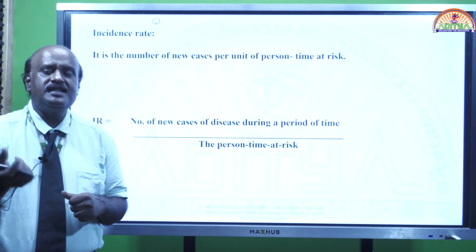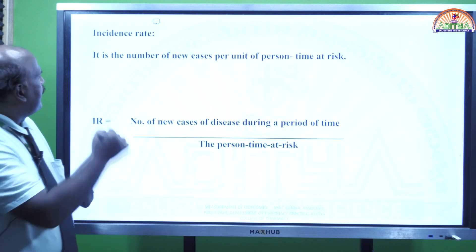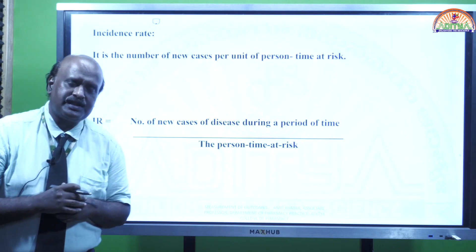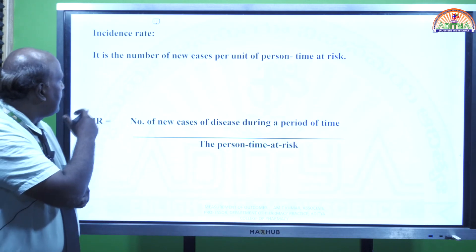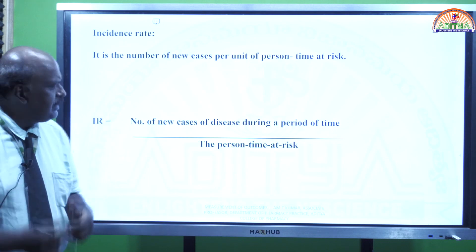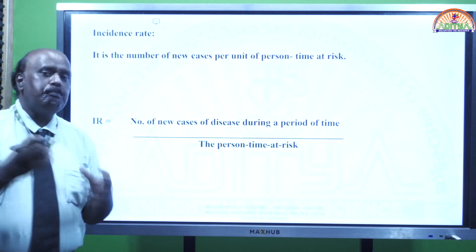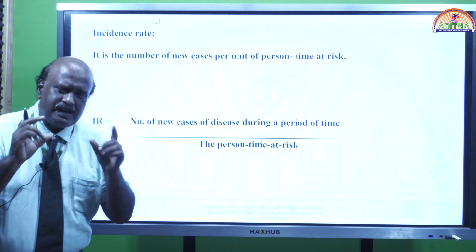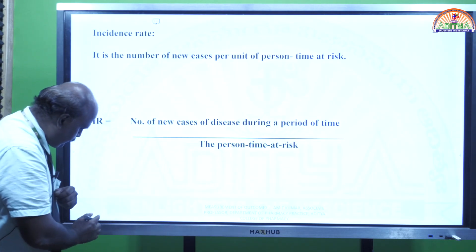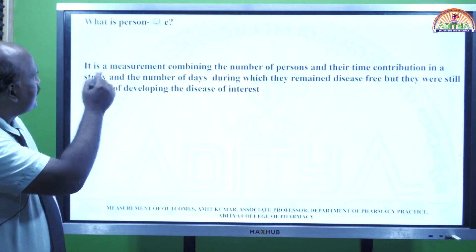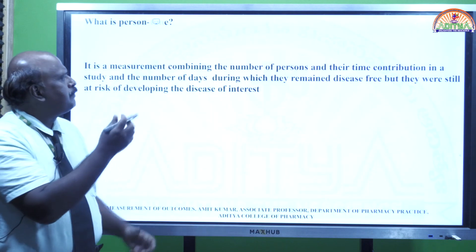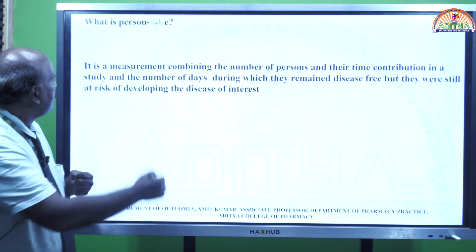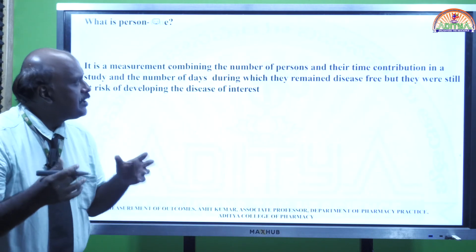The next method to measure incidence is called the incidence rate. It is the number of new cases per unit of person-time at risk. Incidence rate (IR) equals the number of new cases of disease during a period of time divided by the person-time at risk. Person-time at risk is a measurement combining the number of persons and their time contribution in a study, and the number of days during which they remain disease-free.